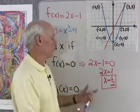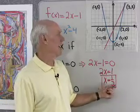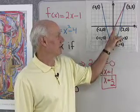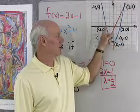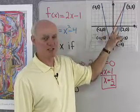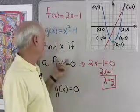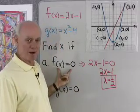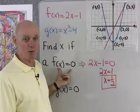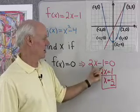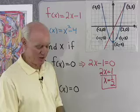So y is going to be equal to 0 when x is equal to 1 half, and over here on the graph you can see that when x is 1 half, the red graph crosses the x-axis, meaning that y is equal to 0. So saying find x if f of x is equal to 0 is the same as saying find x if y is equal to 0. I just take 2x minus 1, set it equal to 0, and I get x equal 1 half.